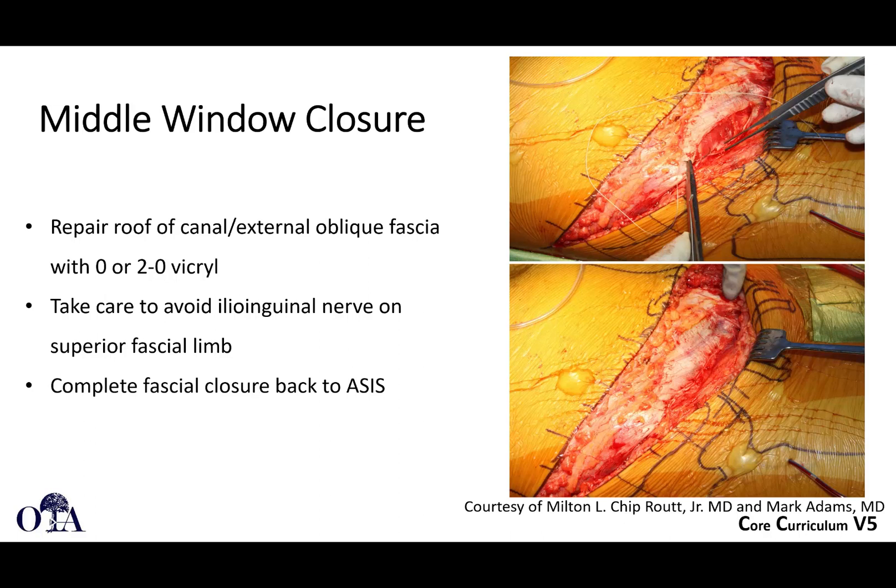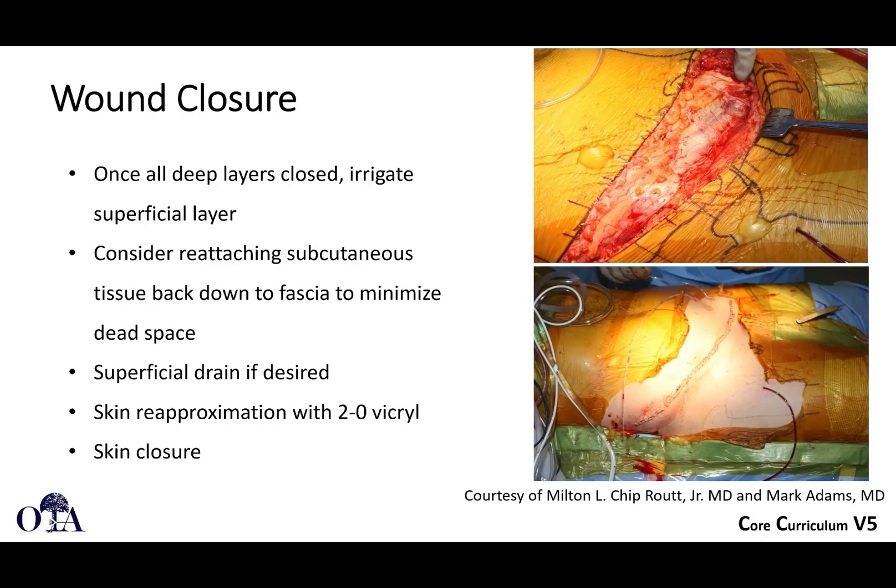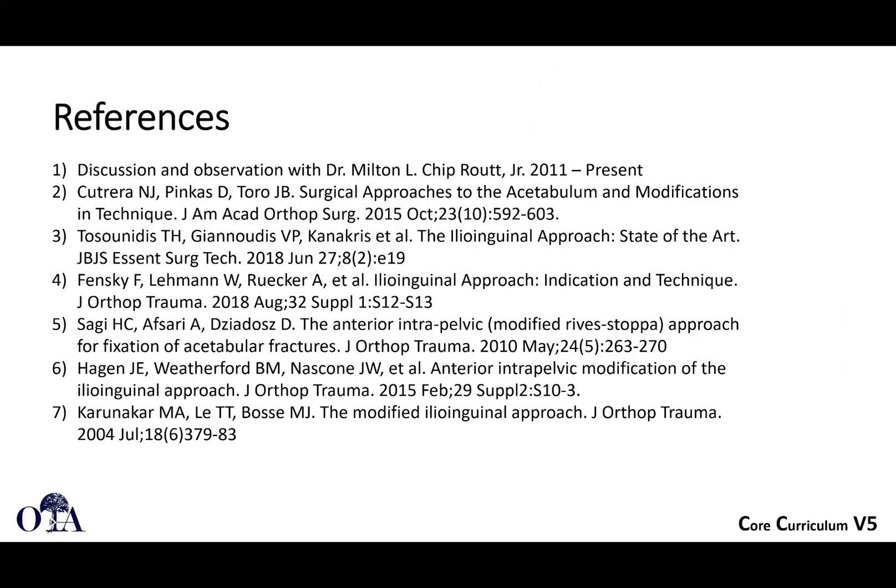Repair the roof of the canal by getting the external abdominal oblique fascia back together. Avoid injury to the inguinal nerve, and complete your fascial closure all the way back to the ASIS. Consider reattaching subcutaneous tissue back down to fascia to minimize dead space — this is your Scarpa's fascia. A superficial drain is not often required. Then proceed to skin closure. It's a pretty large incision, so do take your time.